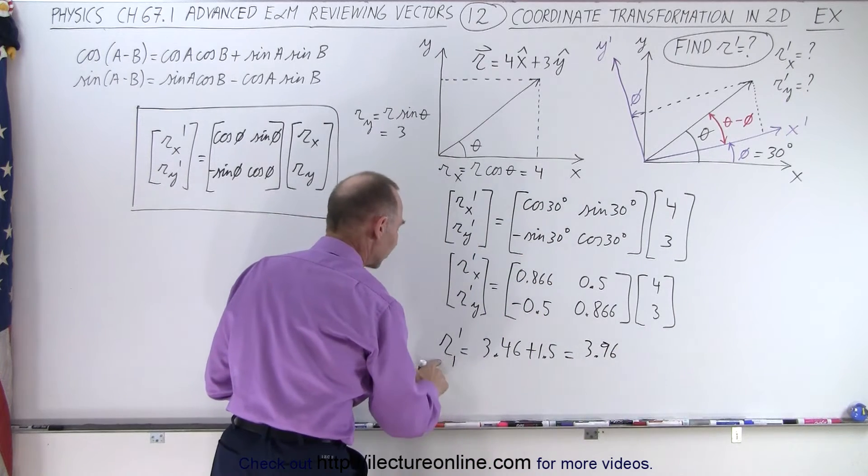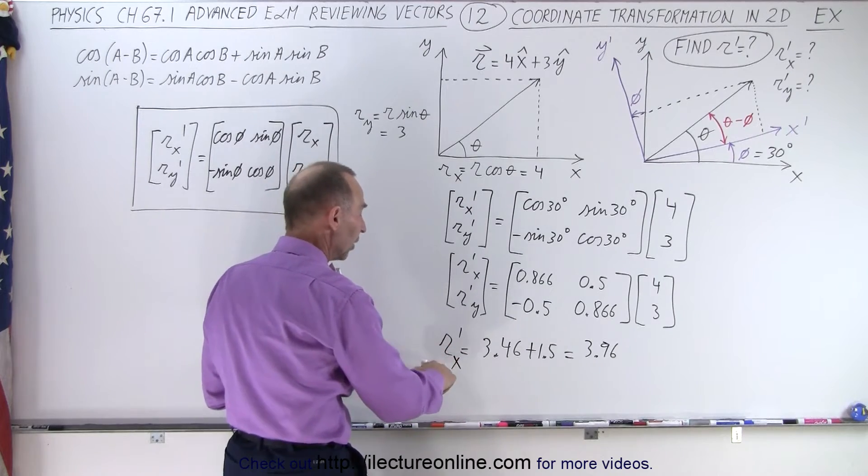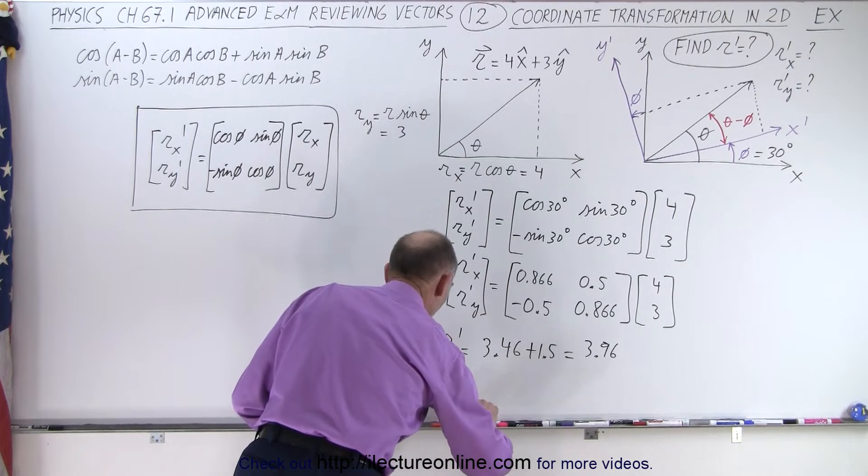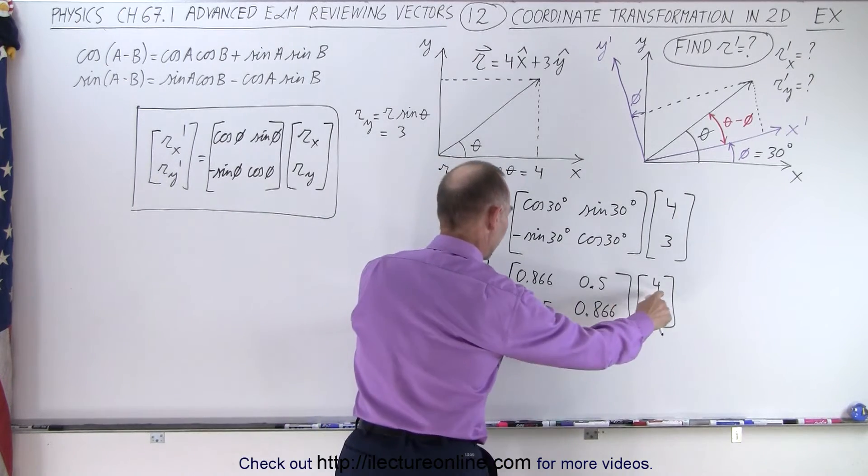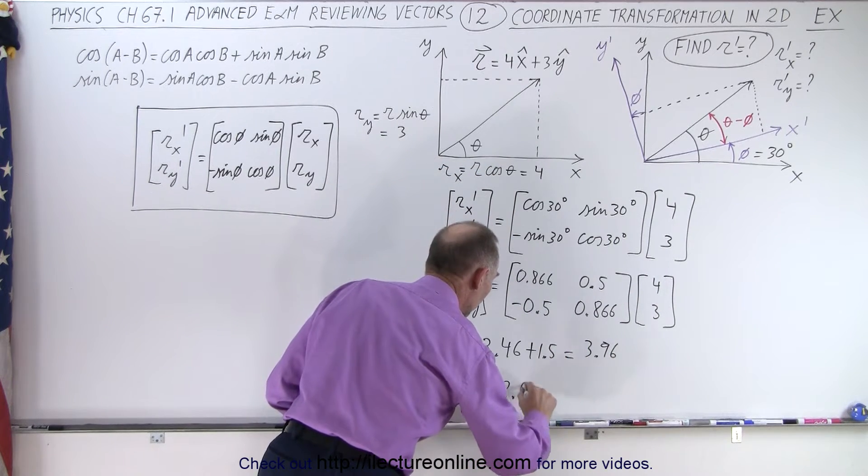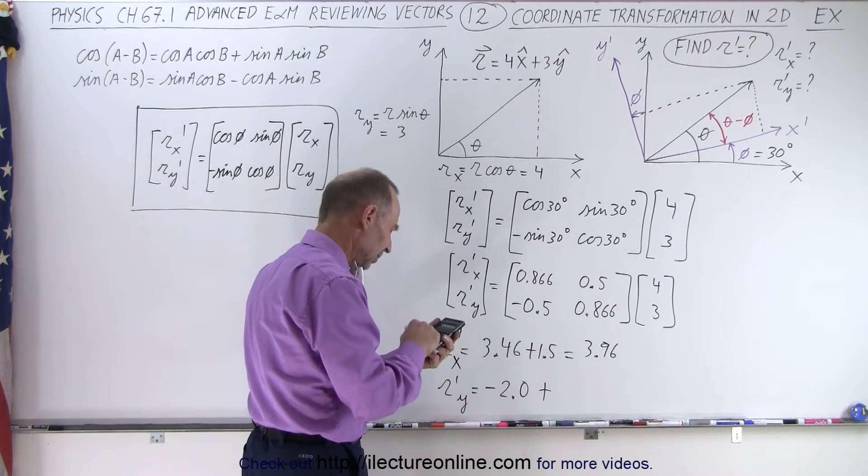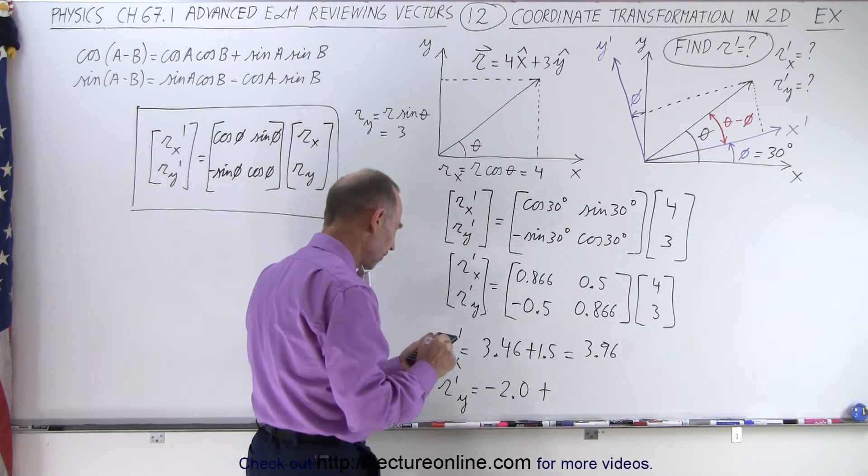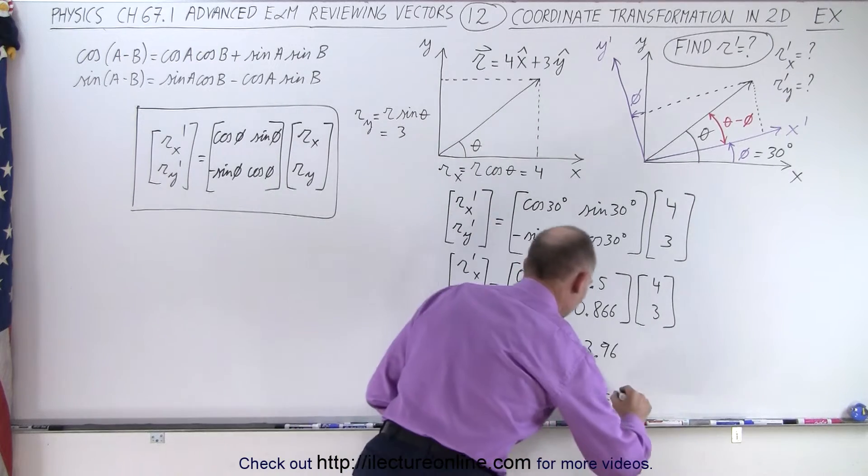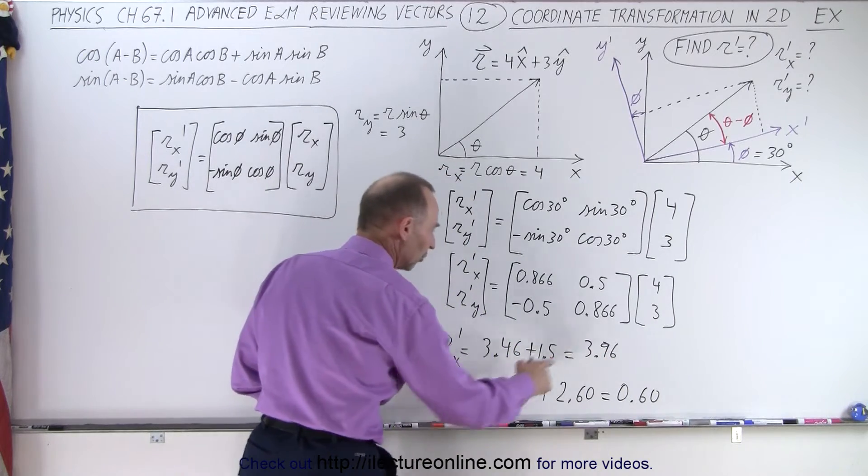So that would be the length of the X component and of course this is sub X, there we go, the X component of the R vector in the new coordinate system. And now the R'Y is equal to, and so here we have 4 times negative 0.5, that would be negative 2.0 plus, and so we have 3 times 0.866, 0.866 times 3, which is 2.60, 2.60 minus 2, that would be 0.60.